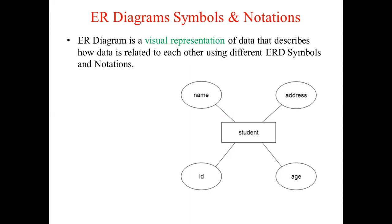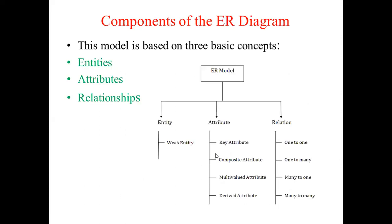ER diagram is a visual representation of data that describes how data is related to each other using ERD symbols and notation. ER models allow you to draw the database design. It is an easy-to-use graphical tool for modeling data, and it is a GUI representation of the logical structure of the database. It helps you to design the entities which exist in a system and the relationships between these entities. For example, a student is one entity — a person — which has different attributes such as name, address, and age. By just viewing this figure, we understand what the student entity represents.